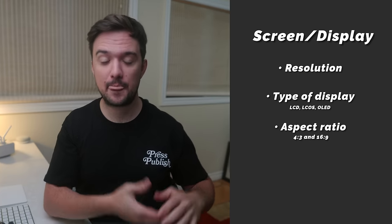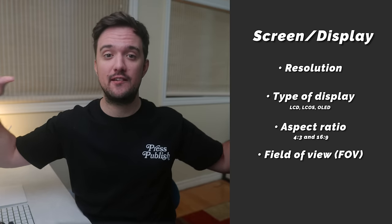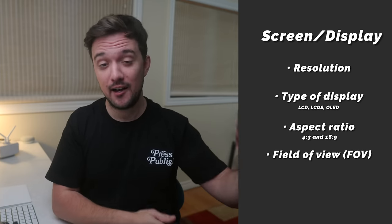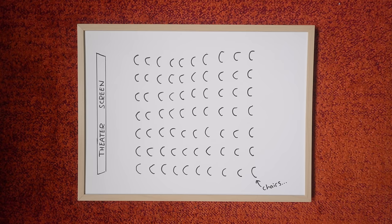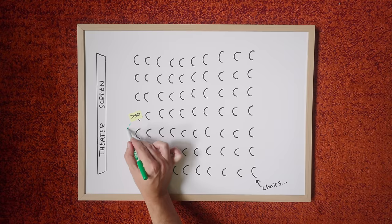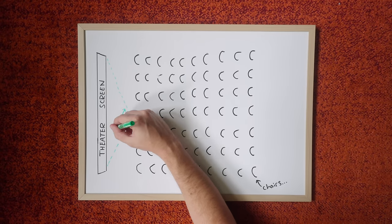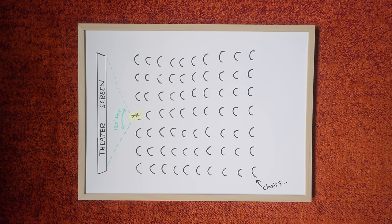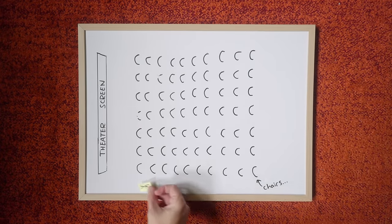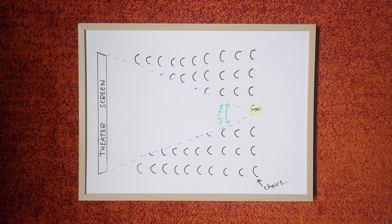You'll also want to consider the field of view, which represents how much of your range of vision the screen takes up — or how close and big the screen seems to be. A good way to think about it is like watching a film in a movie theater: depending on where you sit, the screen will look different. In the front row, the screen appears bigger and takes up your entire field of view, creating a very immersive experience. Further back, the screen takes up less of your field of view and it's easier to see every part of the action. When it comes to racing or freestyle, some pilots prefer a smaller field of view to help them see every obstacle more easily and be more precise.